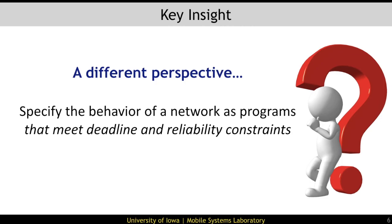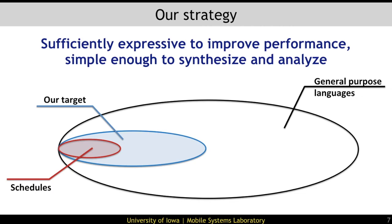To address these issues, we will approach the specification of network behavior from a different perspective. Specifically, instead of specifying behavior as schedules, we will specify behavior as programs. Our approach differs from ongoing work on software-defined networks in that the programs we synthesize must meet both deadline and reliability constraints. If we consider general-purpose programs, their expressive power comes from their ability to maintain state and to query and modify that state — features not present in schedules. A more flexible data plane could be specified using a general-purpose language; however, the behavior of general programs is significantly harder to analyze. Therefore, we seek to identify a domain-specific language that provides sufficient expressive power for flexible data plane behavior but remains simple enough to analyze in an automated manner.